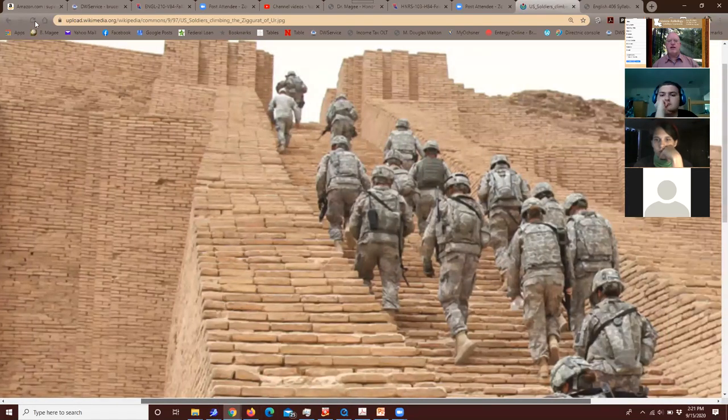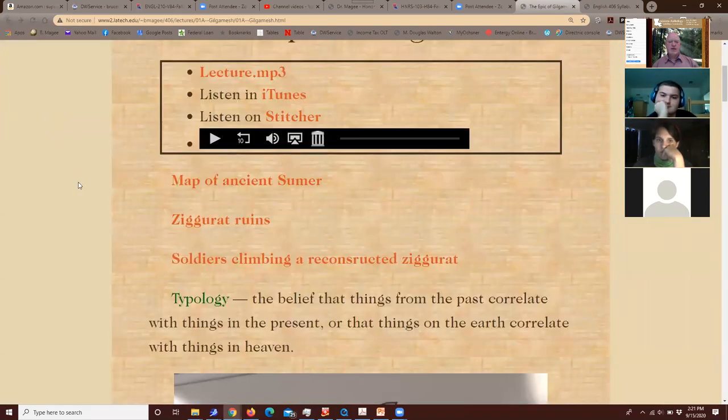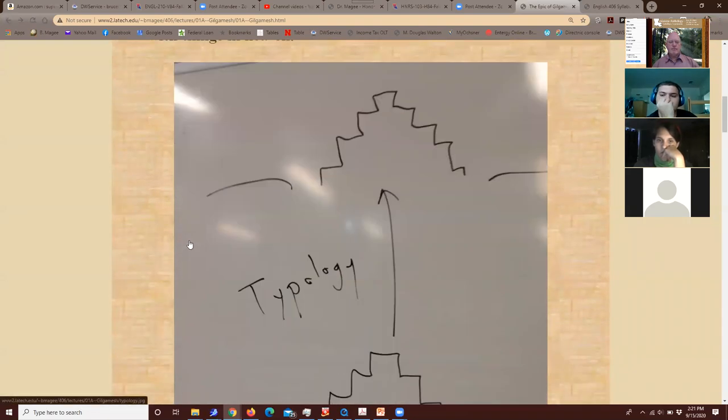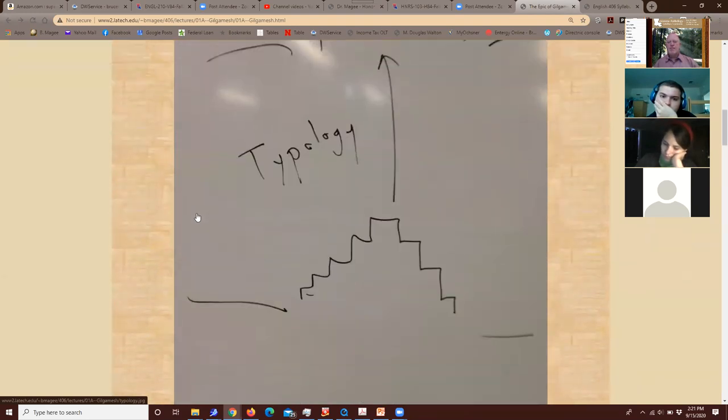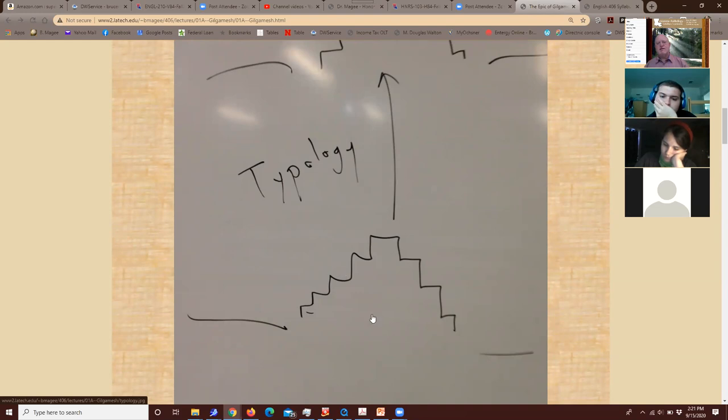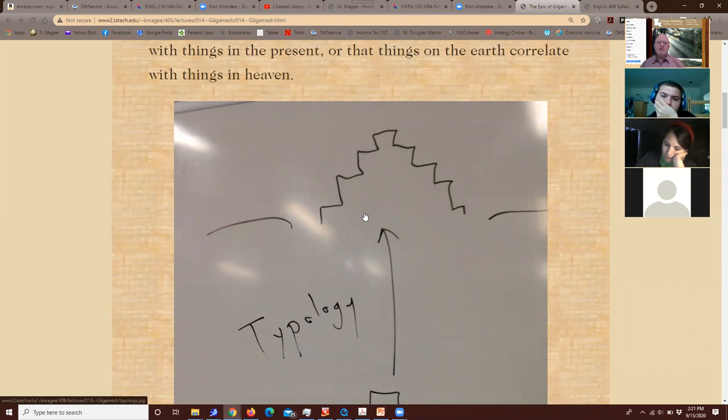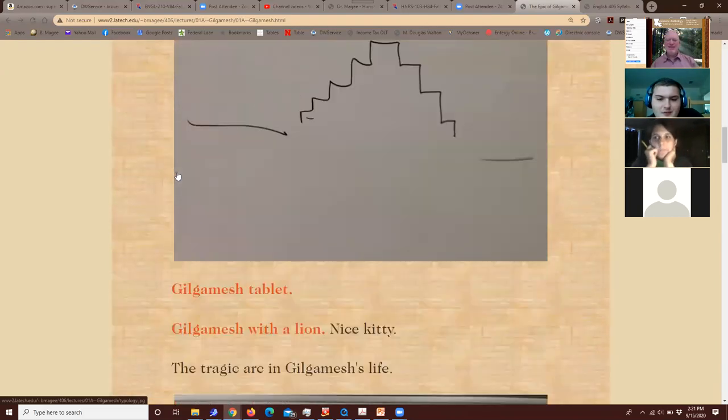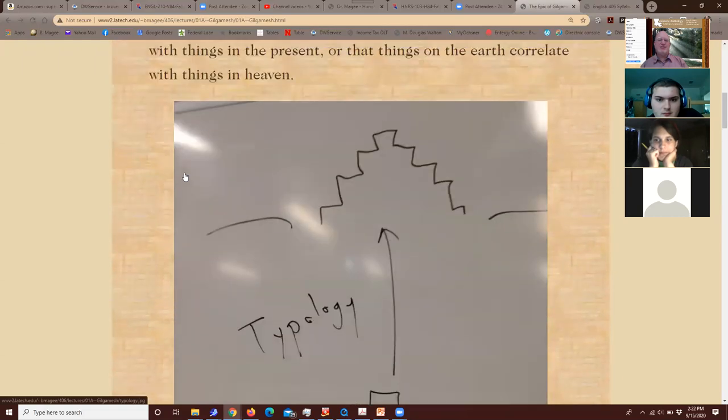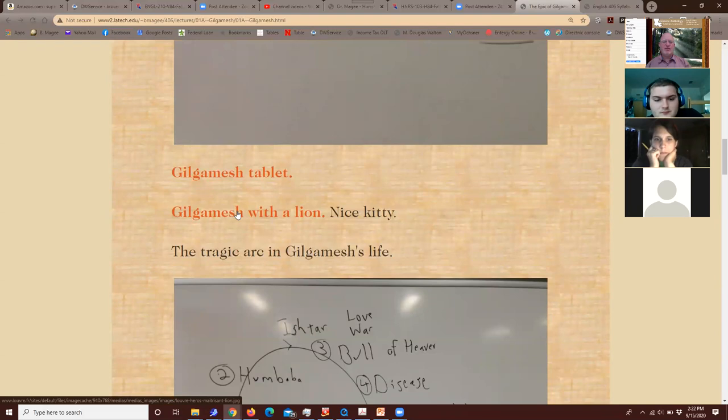Here's some American soldiers desecrating a ziggurat. There's a lot of typology. Vertical typology is the idea that something on the earth is built to match something in the heavens. Genesis takes a look at these ziggurats and says, these are people trying to build a stairway to heaven, and it's impious.